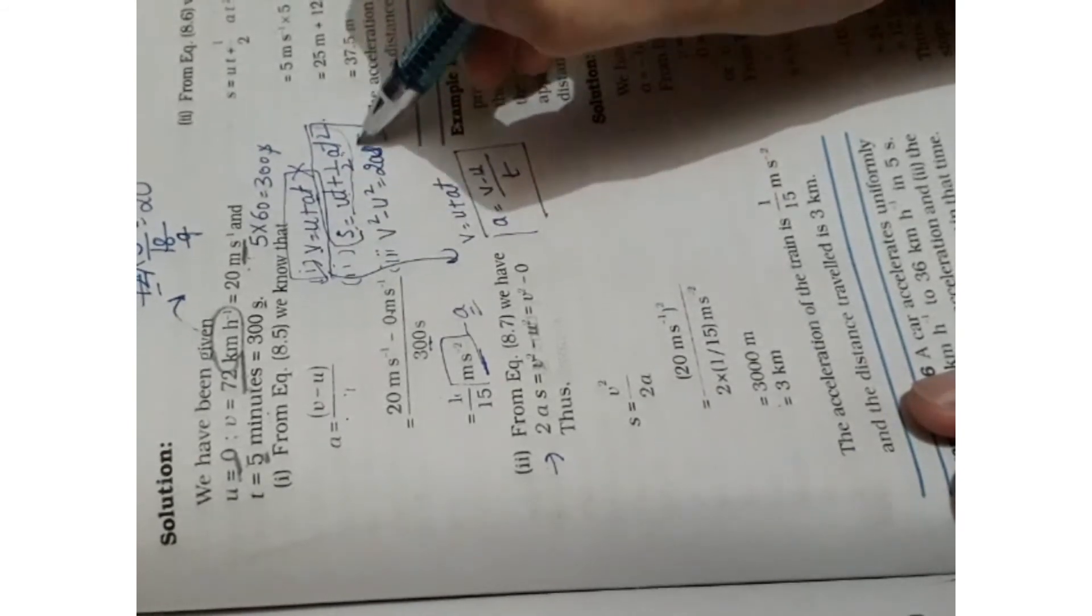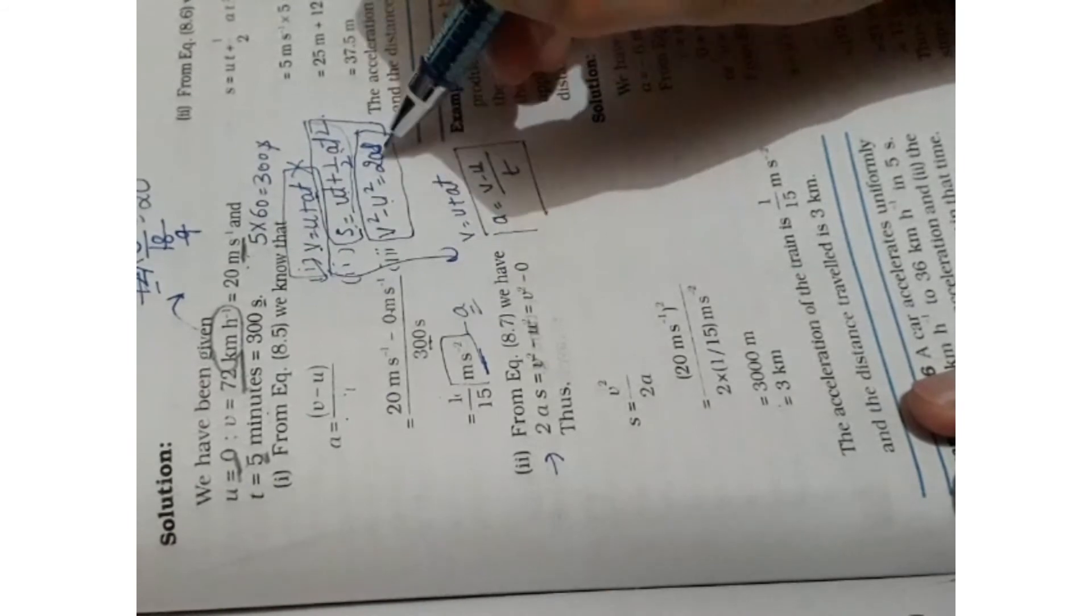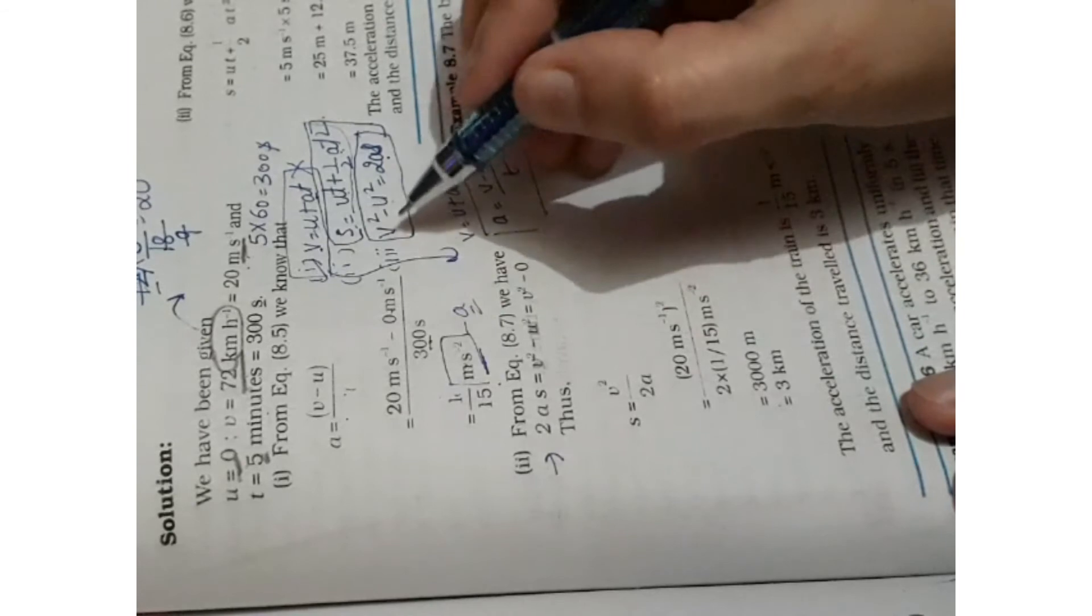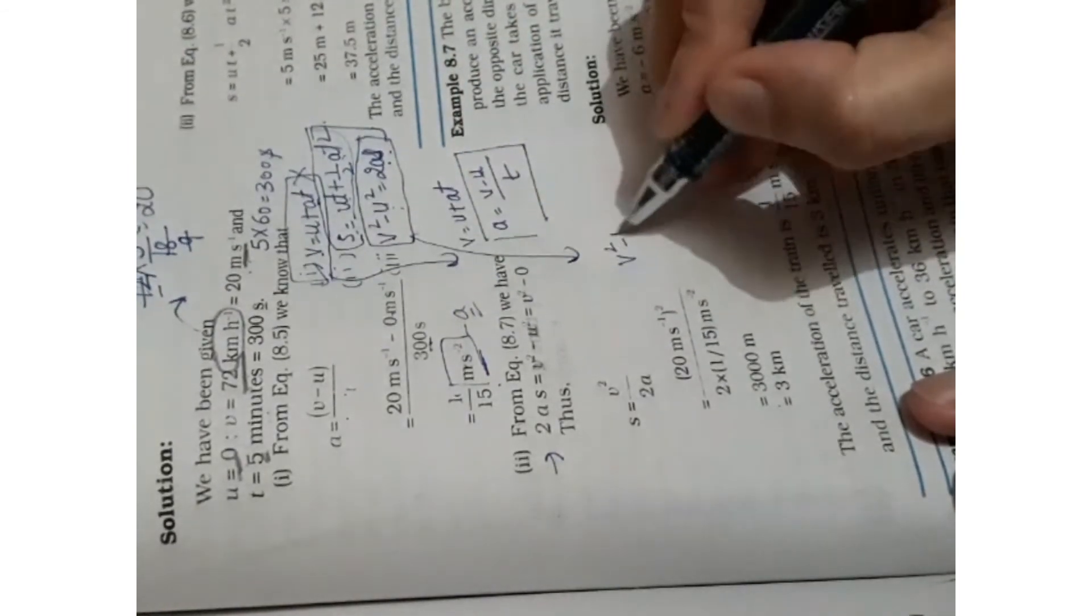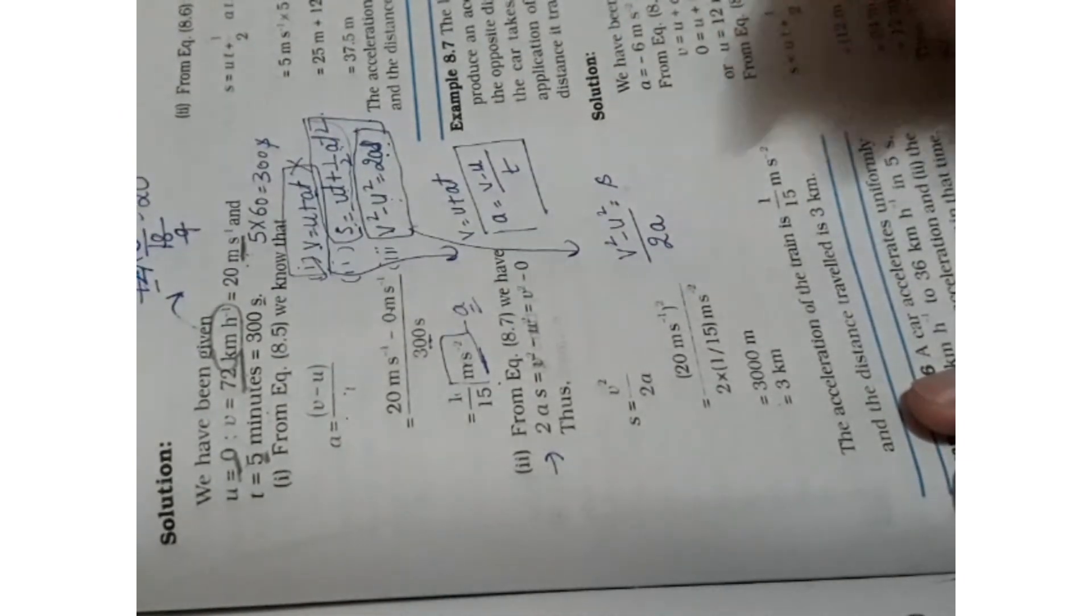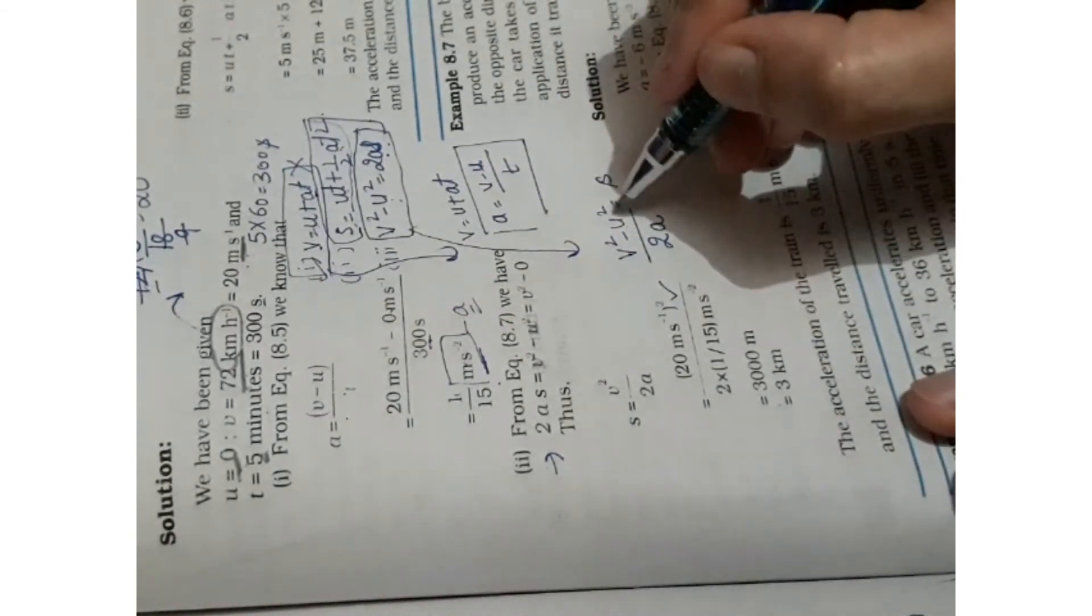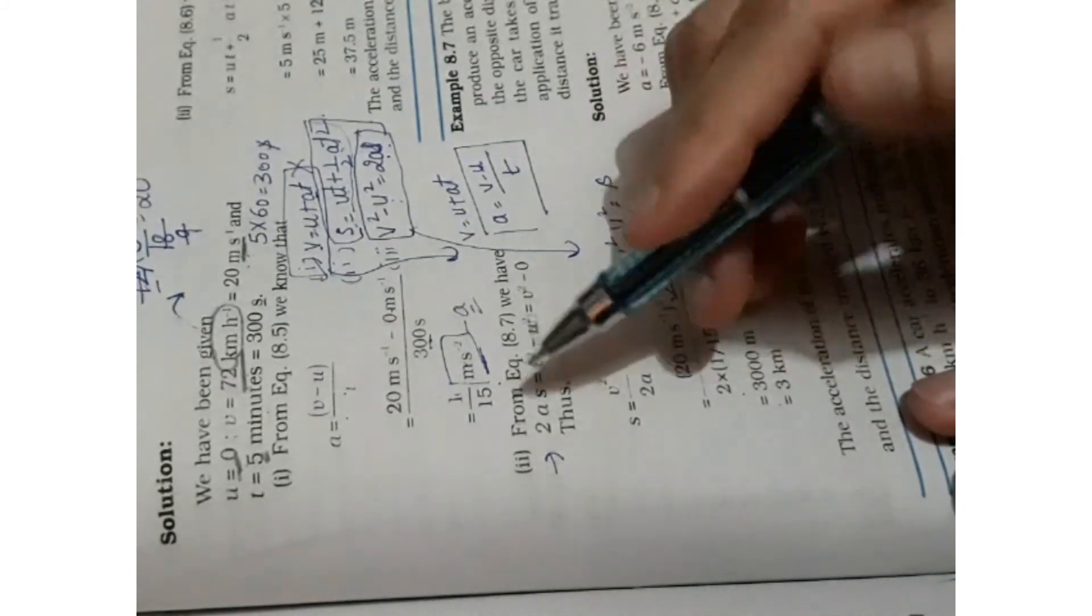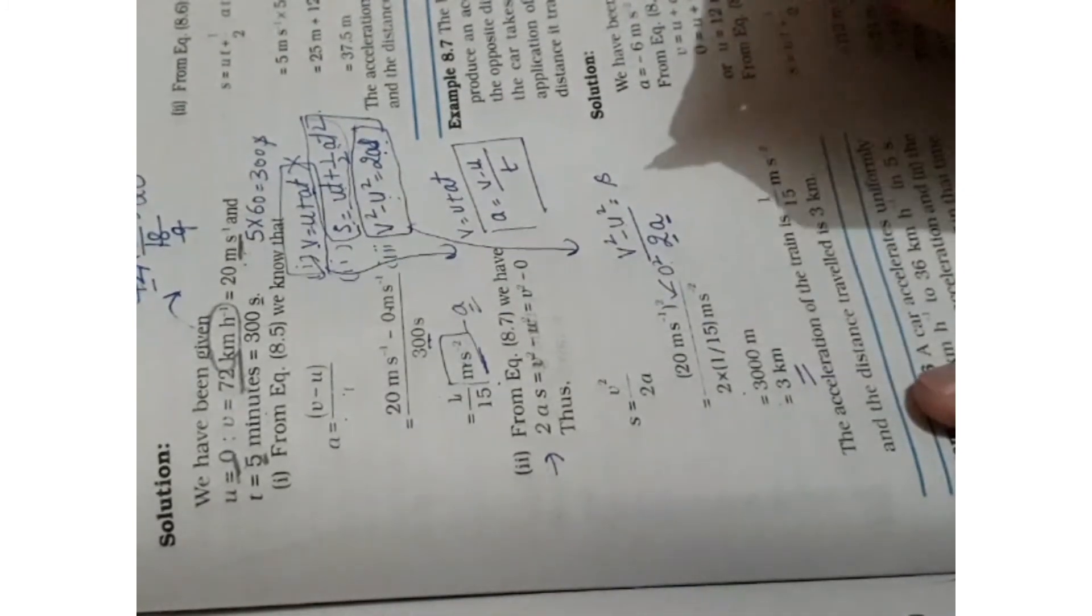But we have to substitute more value. If we put this formula, what will happen? So our value is given. This is 2a. Now we put the value of v square. How much was it? 20 square. We put it here. There is no need to add 0 to it. If we put it like this, it will be 0. Now we put the value of 2a. We put the value of a and we have 1 over 15. So we have solved it. And our answer is 3 kilometers.